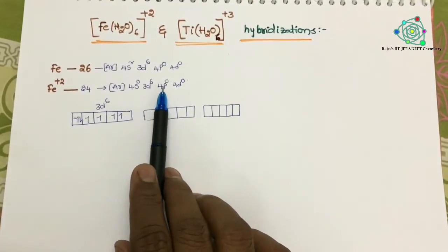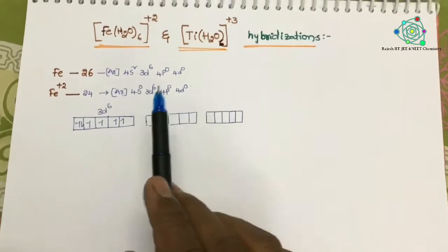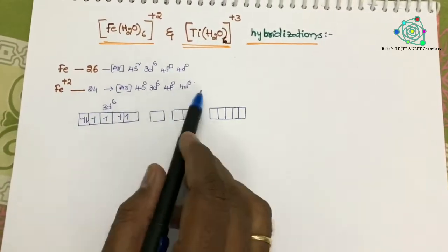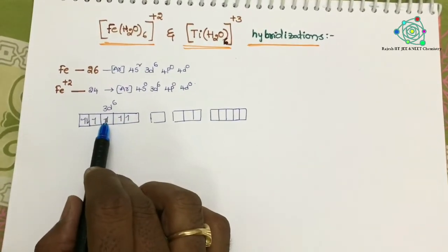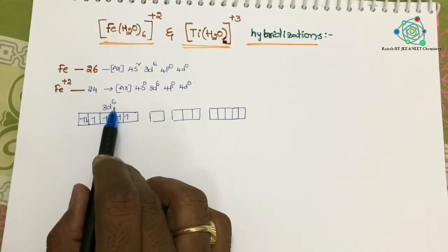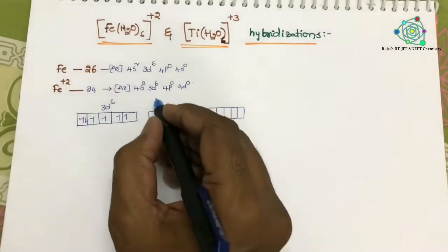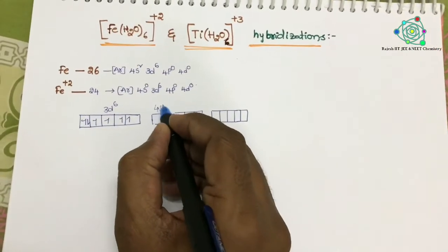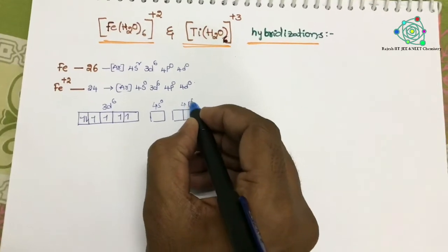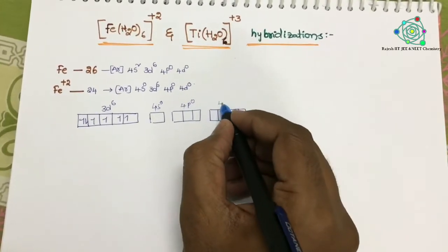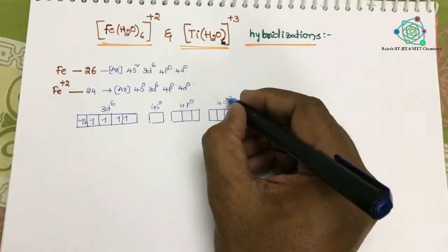Here: 4s = 0, 3d = 6, 4p = 0, 4d = 0. Now, if you write those orbitals in order: 3d has 6 electrons, 4s has 0 electrons, 4p has 0 electrons, and 4d has 0 electrons.